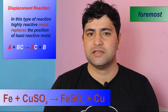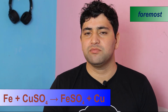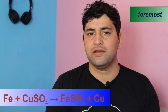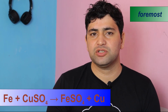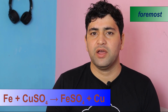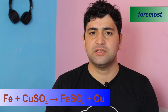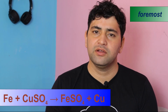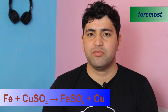Here, in this case, iron metal is more reactive than copper. So, it easily replaces the position of copper, takes its position with sulfate, and forms iron sulfate and copper. So, this is an example of displacement reaction.